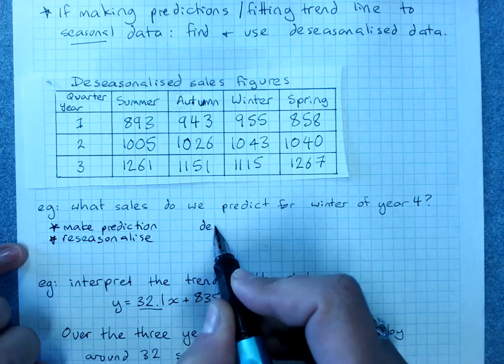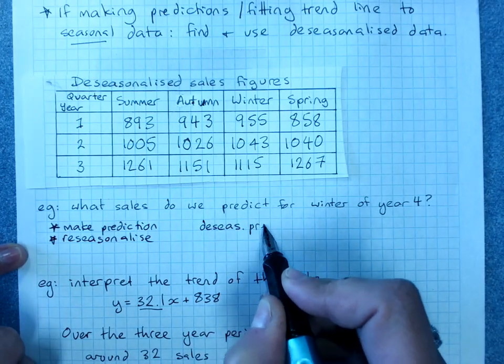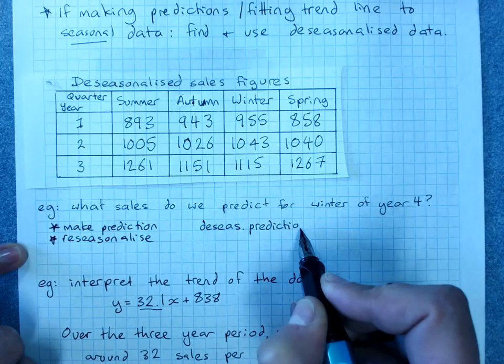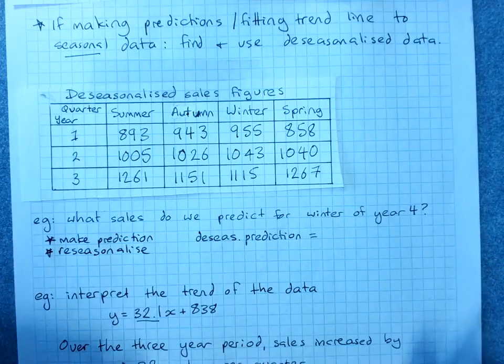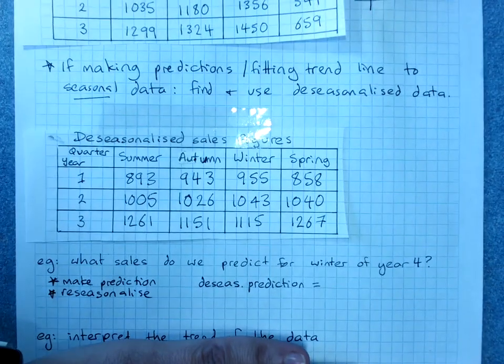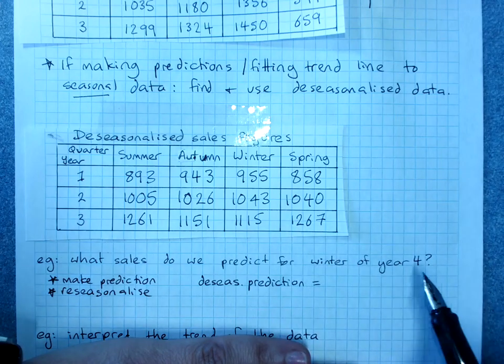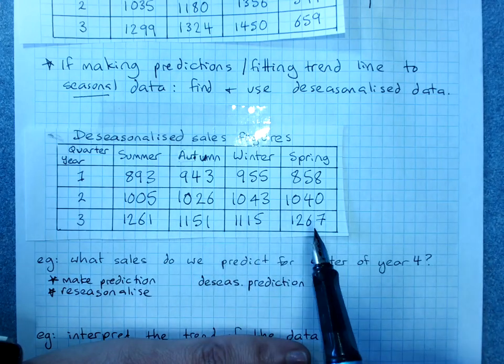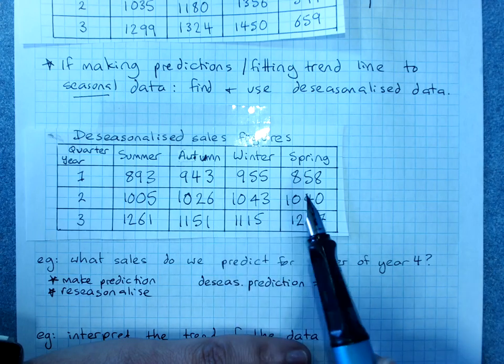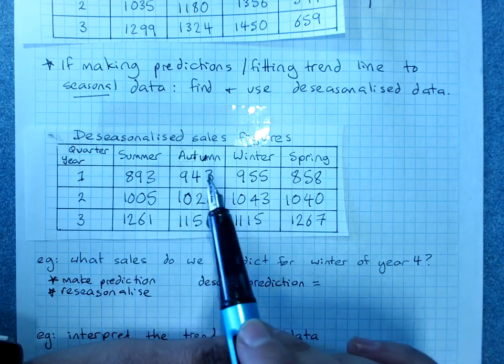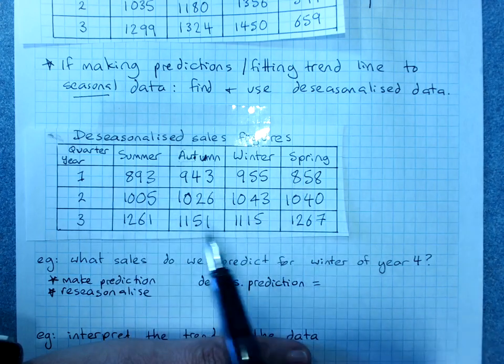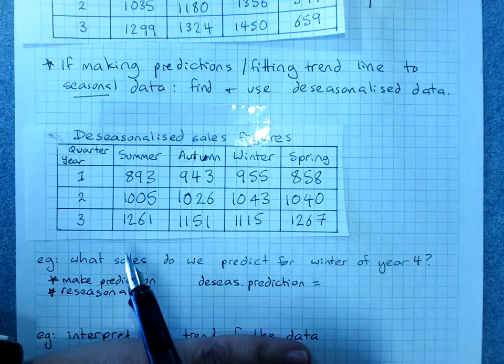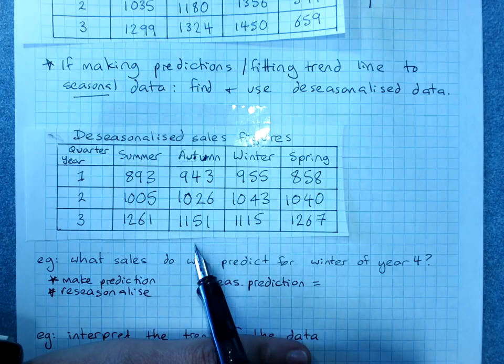So our de-seasonalized prediction for winter of year 4, now we got up to 12, because remember we don't put in years or anything, it's just quarter 1, 2, 3, 4, all the way up to 12. So winter of year 4 would be 13, 14, 15.